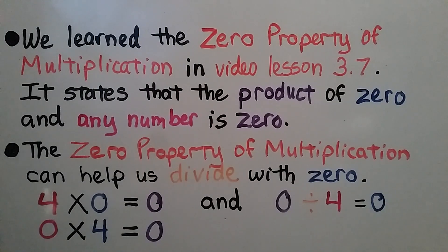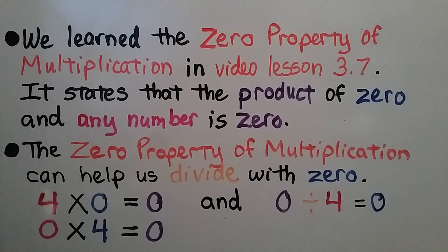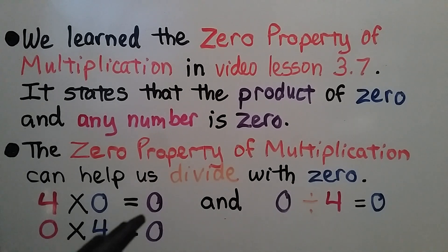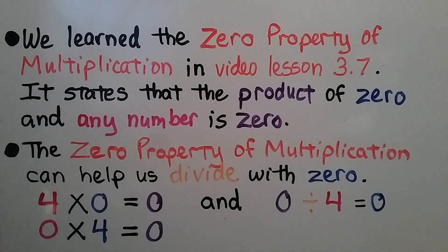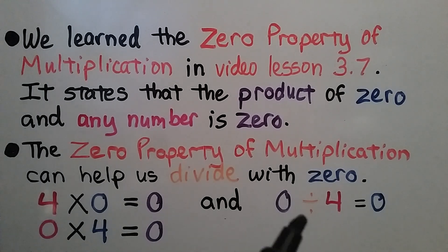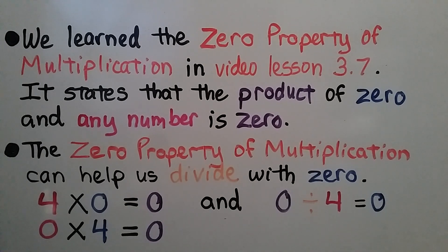We learned the zero property of multiplication in video lesson 3.7, and it states that the product of zero and any number is zero. The zero property of multiplication can help us divide with zero. We have 4 times zero is equal to zero, and 0 times 4 is equal to zero. And if we have zero for our dividend divided by 4 as the divisor, our quotient will be zero.